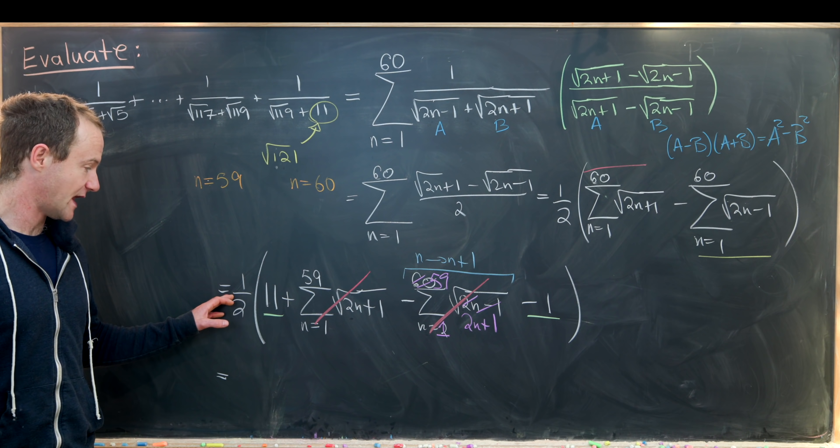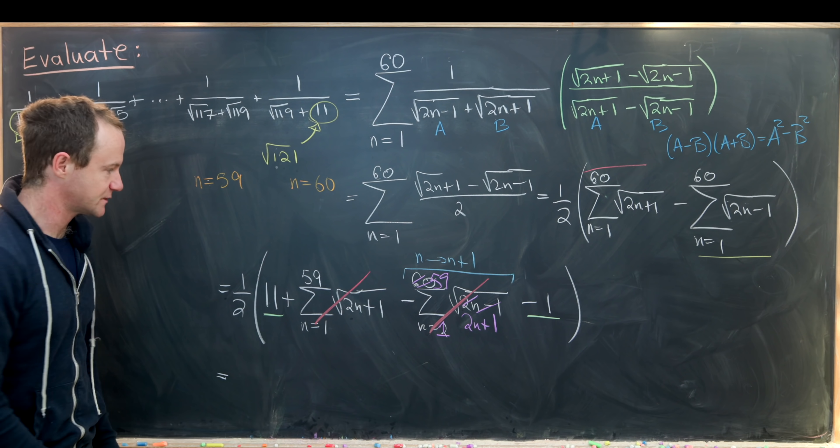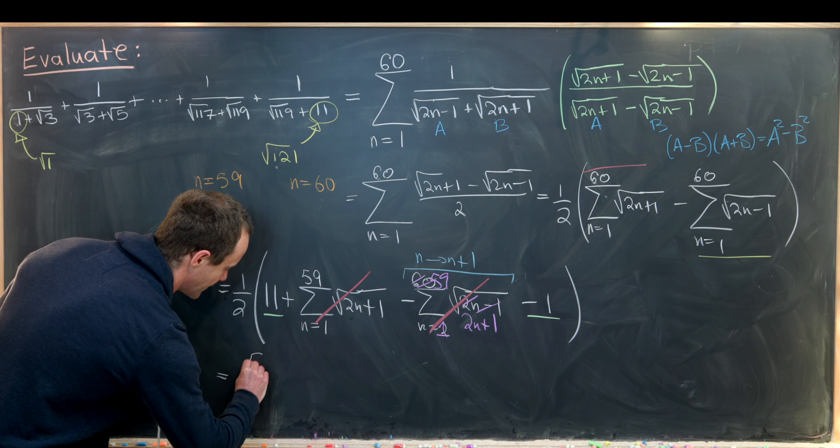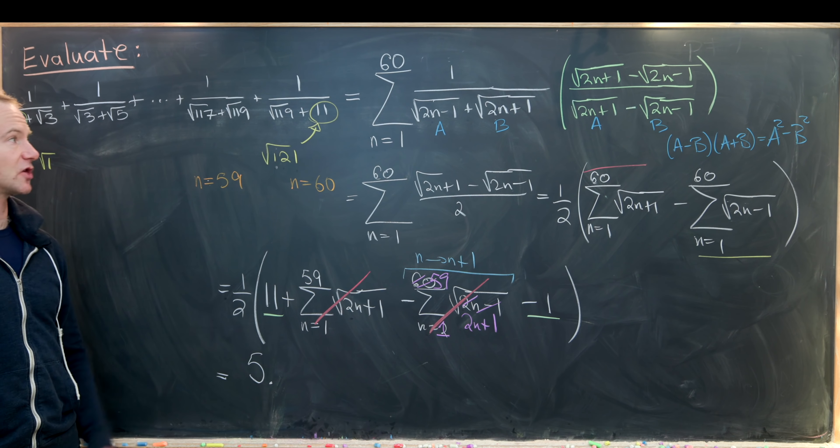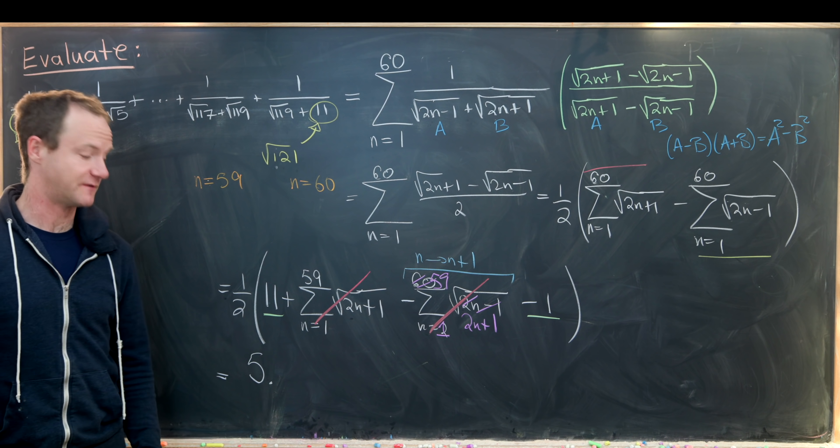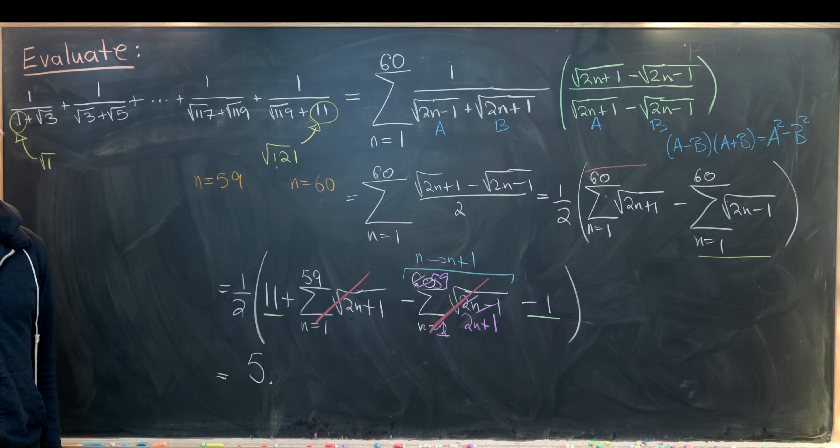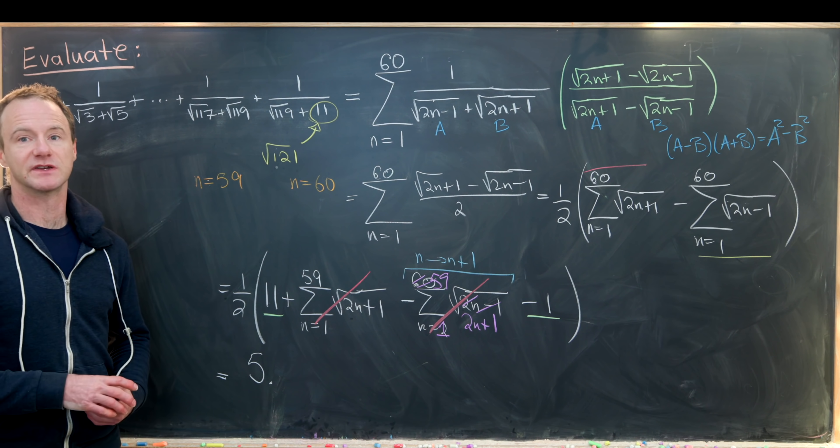Then we're left with one half times 11 minus 1, or one half times 10, or the number 5. So in the end this thing that started out looking like a crazy sum which would not be simplifiable is in fact just the number 5. And that's a good place to stop.